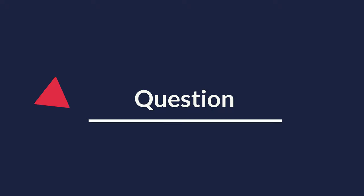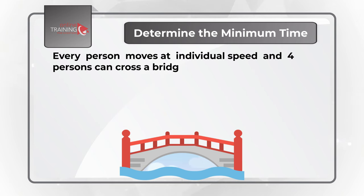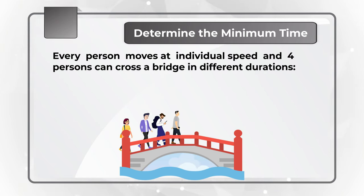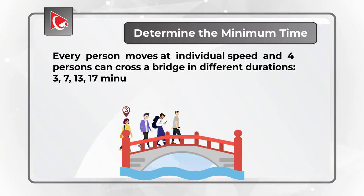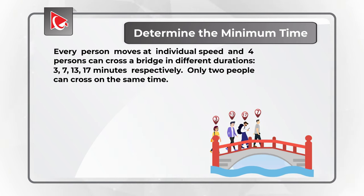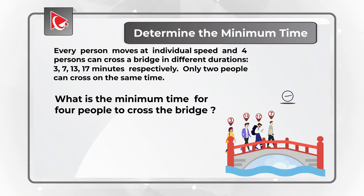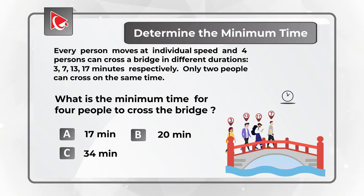Here's an interesting challenge you might frequently see on the test. You need to determine the minimum time for four people to cross a bridge. Every person moves at an individual speed: they can cross in 3, 7, 13, and 17 minutes respectively. The trick is that only two people can cross the bridge at the same time. Choices: A: 17 minutes, B: 20 minutes, C: 34 minutes, D: 12 minutes.